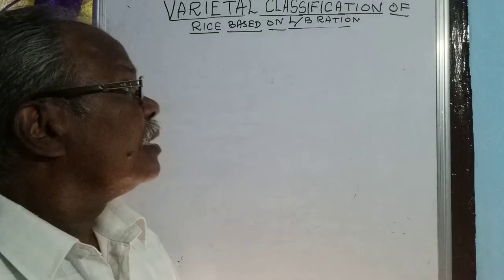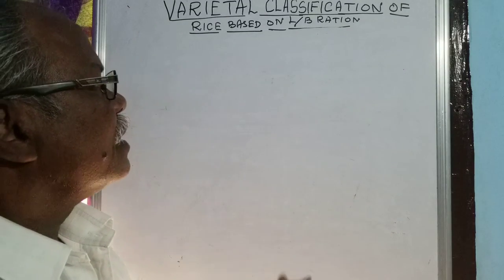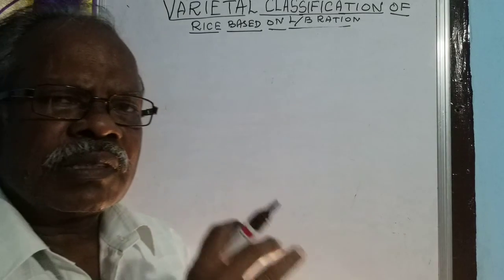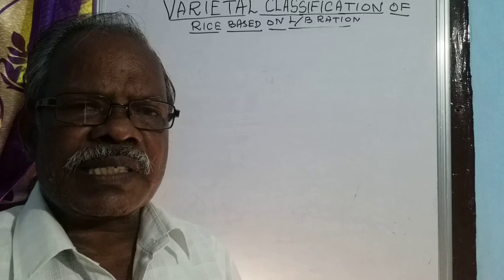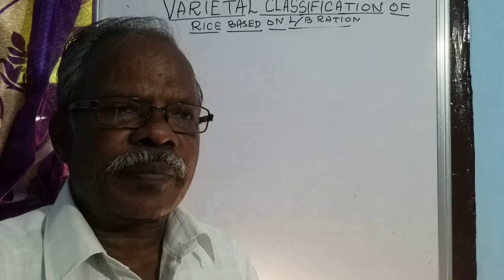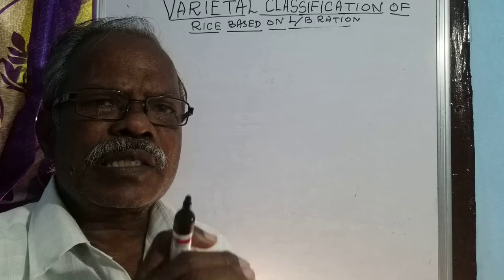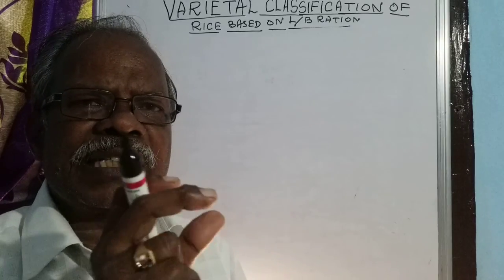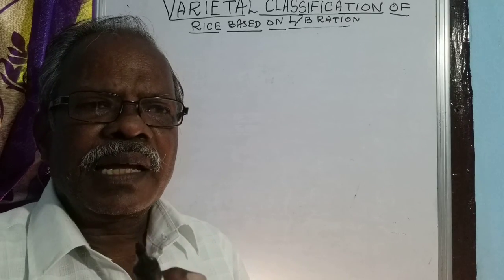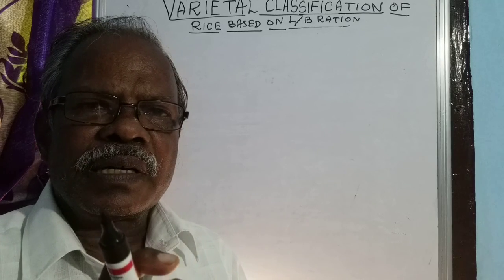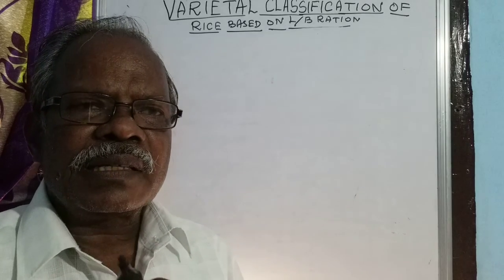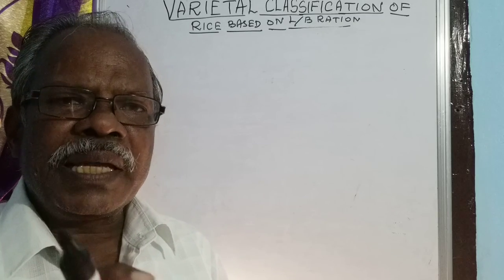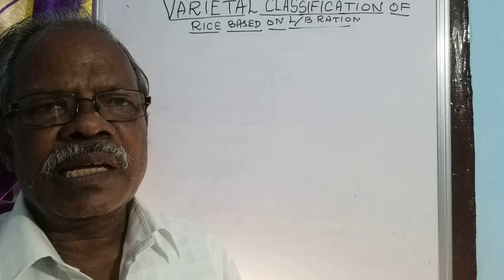Today, let us take up varietal classification of rice based on LB ratio. How the variety is fixed, that we are going to see. It is purely based on length — the measurement of length in millimeters and the measurement of breadth in millimeters. Length divided by breadth gives the LB ratio. Based on this ratio, the variety is fixed.